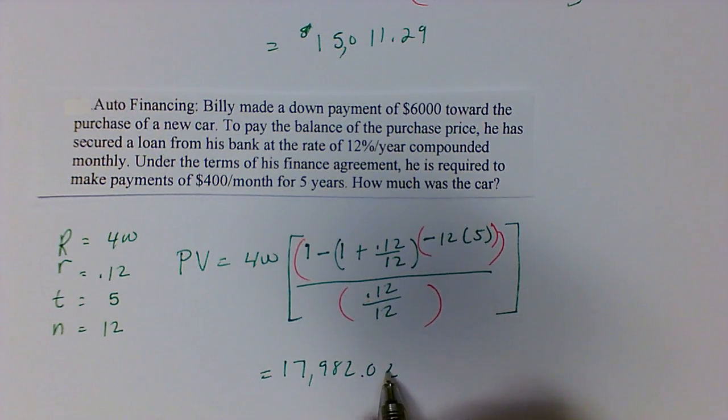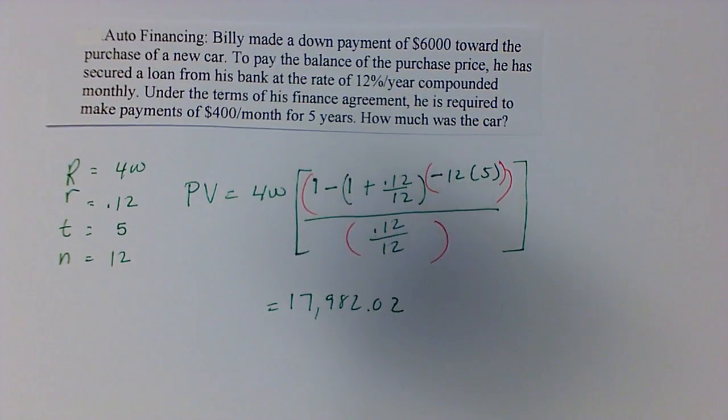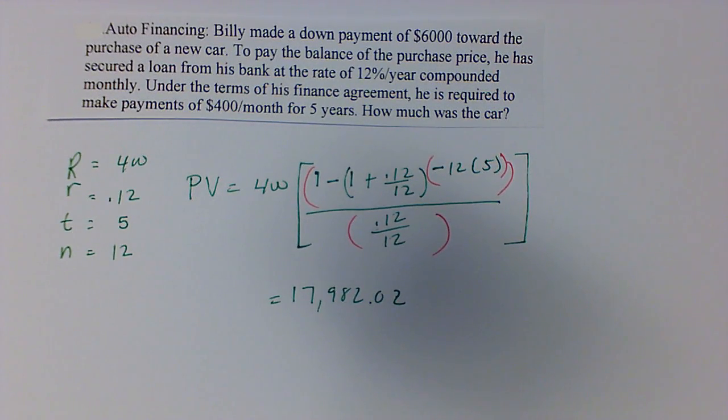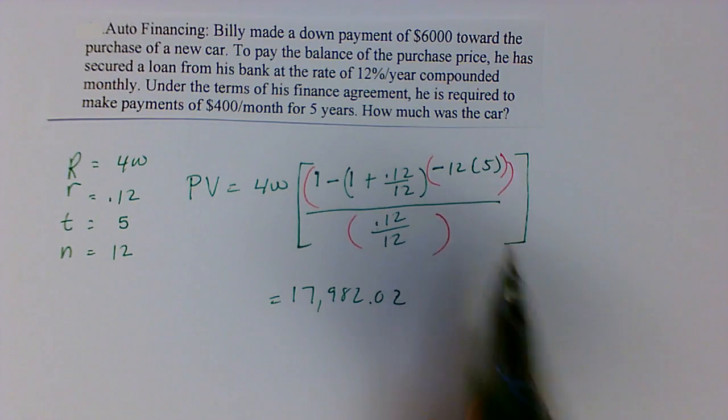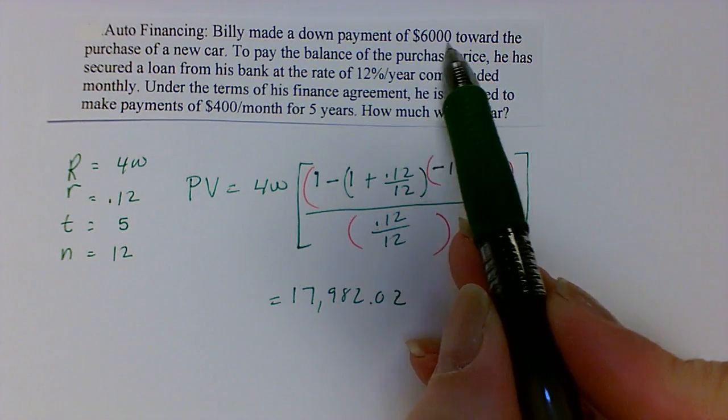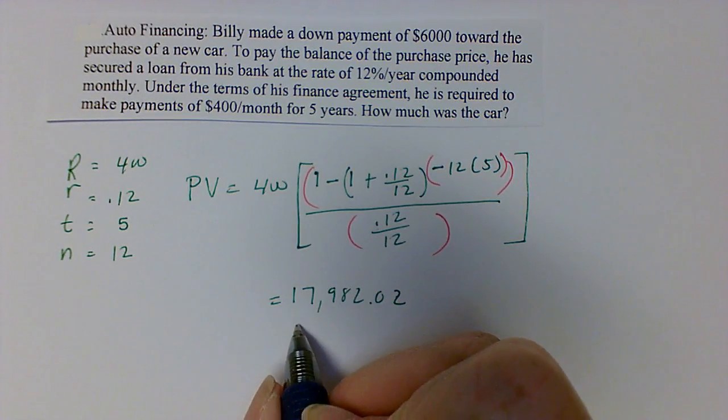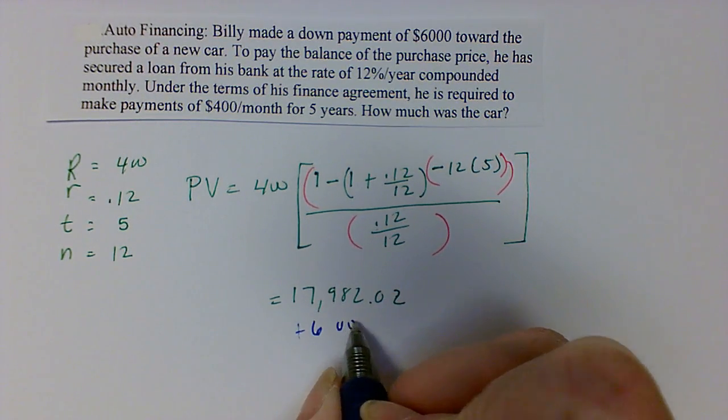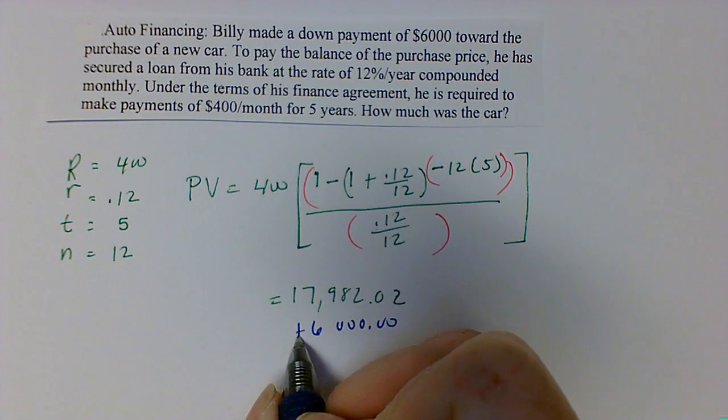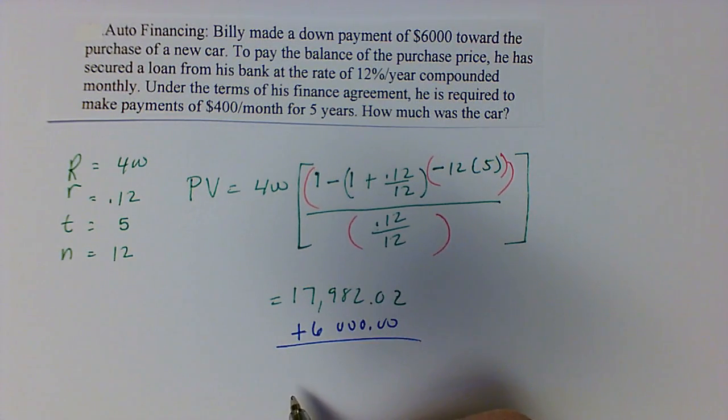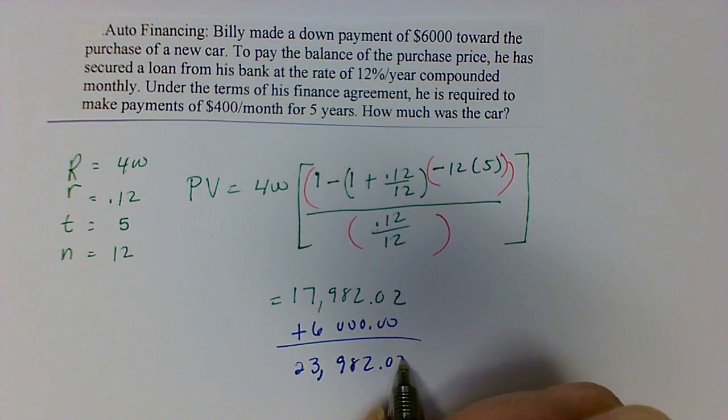But this is not quite what you actually paid for the car. The question was, how much was the car? Remember that you have the $6,000 that you paid as a down payment. So you have to add that $6,000. And when you add that $6,000, you'll actually get a price of $23,982.02.